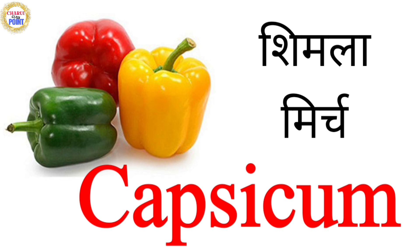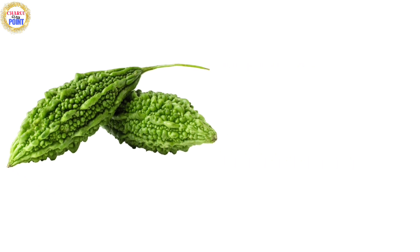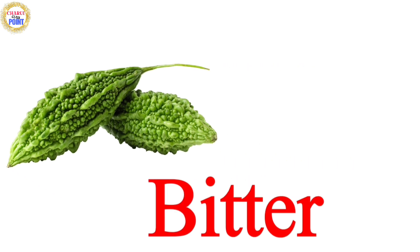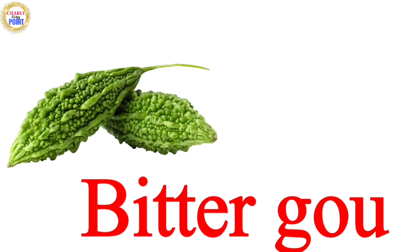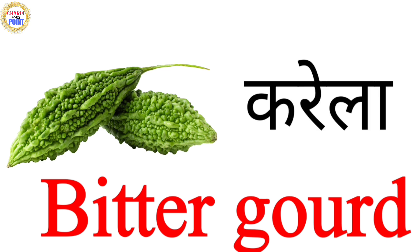Next one is? What is this? Bitter gourd. Spelling of bitter gourd is? B-I-T-T-E-R G-O-U-R-D. Bitter gourd. Means? Karela. Bitter gourd ko Hindi mein kehte hai? Karela. Karela hota hai.